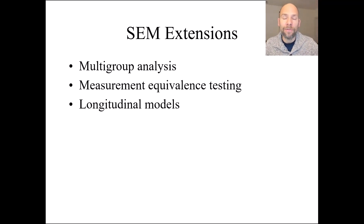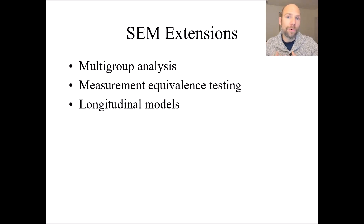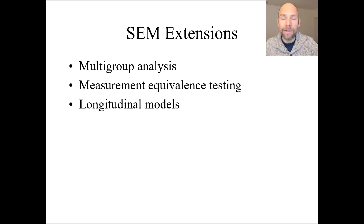An advantage with longitudinal data is that you can account for measurement error. Problems like regression to the mean are reduced. When you look at change scores over time, those would be especially affected by measurement error when using only observed variables. With latent variables, you correct for measurement error and have fewer problems when examining latent change score models or latent difference score variables, which can be defined within the framework of SEM and factor analysis.